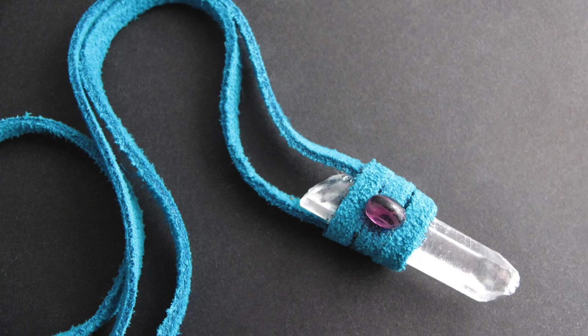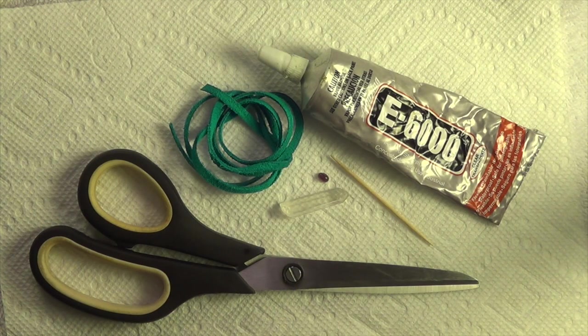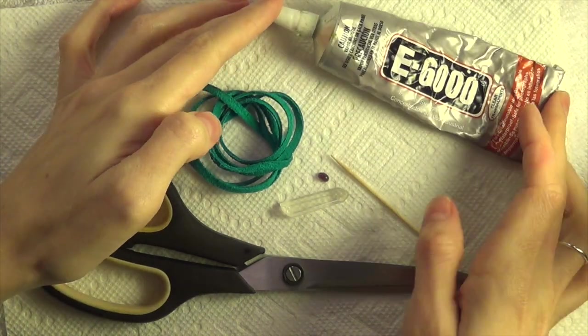Hey everyone, Jessica here from jewelry tutorial hq.com. Today I'm going to show you how to make this leather wrap crystal necklace. The supplies that you're going to need are some E6000 adhesive.